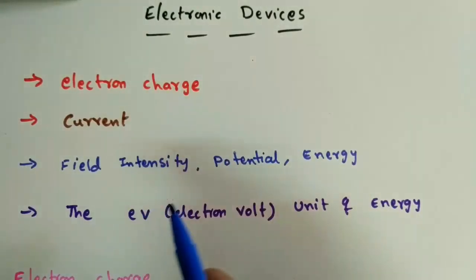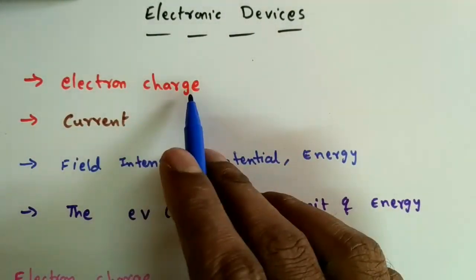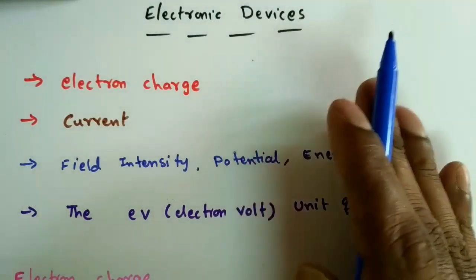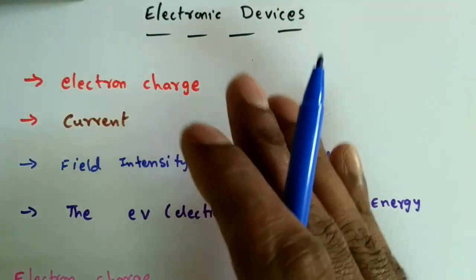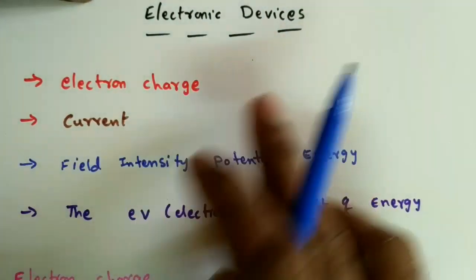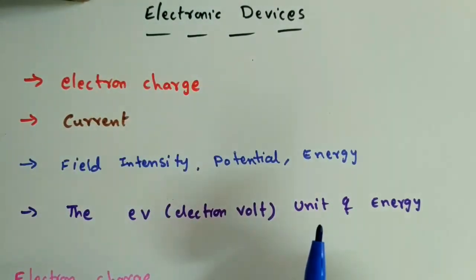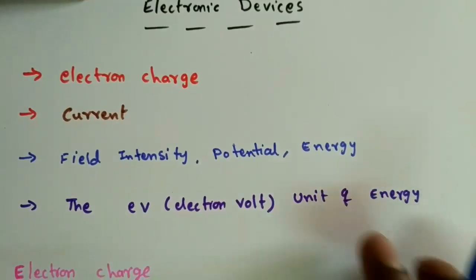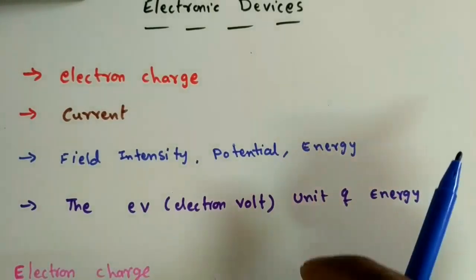In this lecture, I will discuss some important parameters useful for learning concepts in this Electronic Devices course. These are: electron charge — throughout this course we will talk about charges moving from one place to another, either negative or positive charges. When charges are moving, current is produced, so we need to know the equation and units of current. We should also know about electric field intensity, potential, energy, and the electron volt unit of energy.